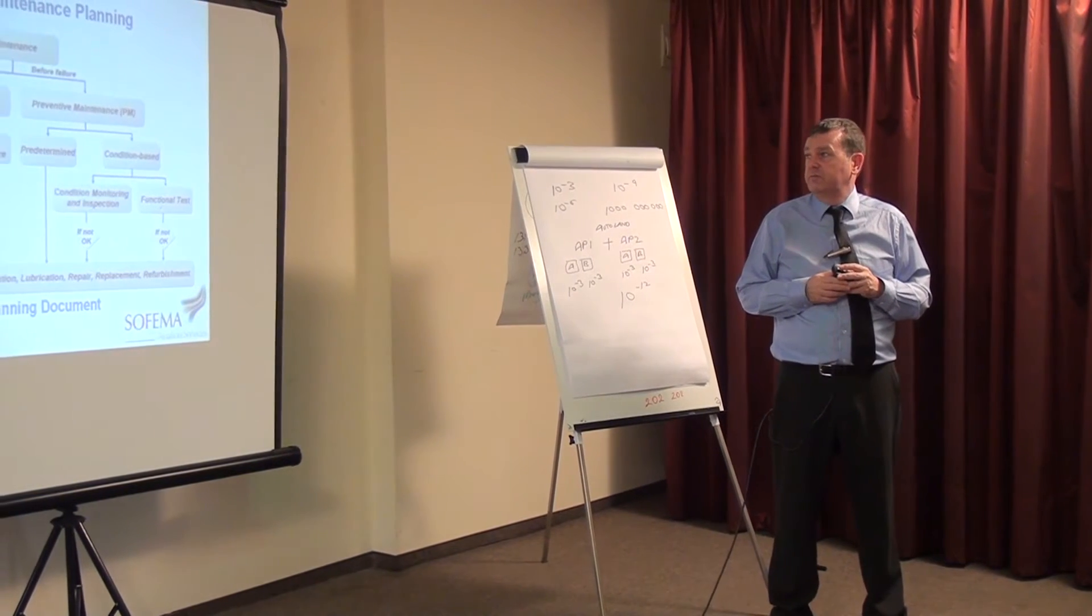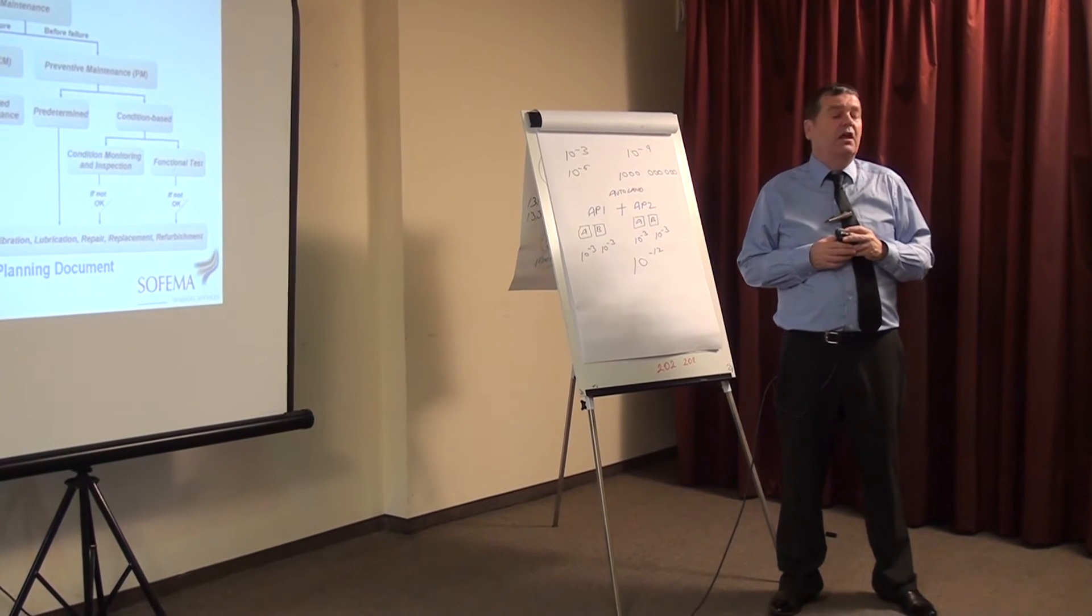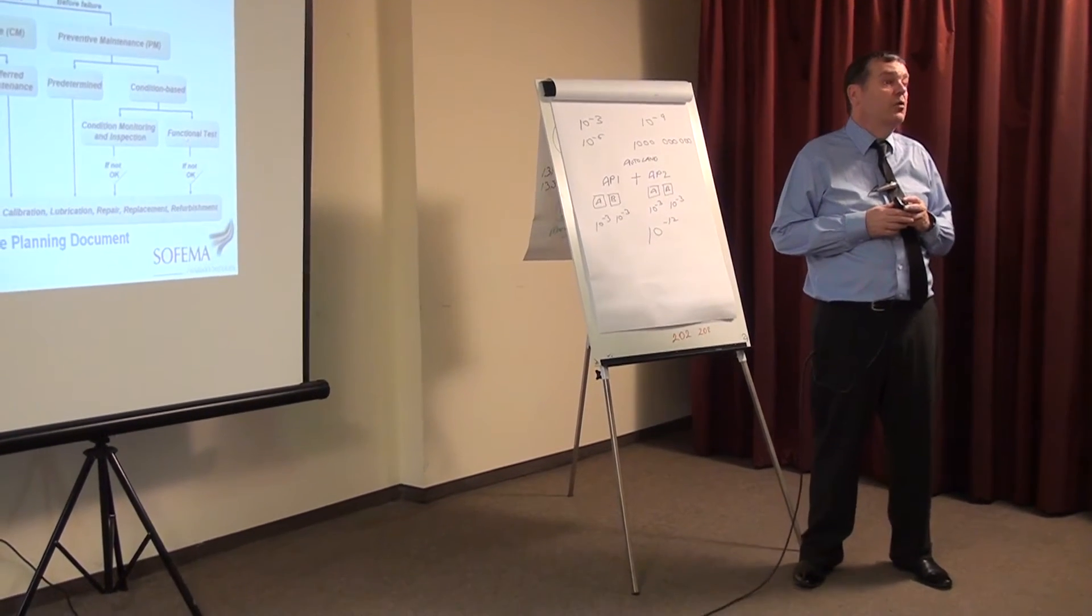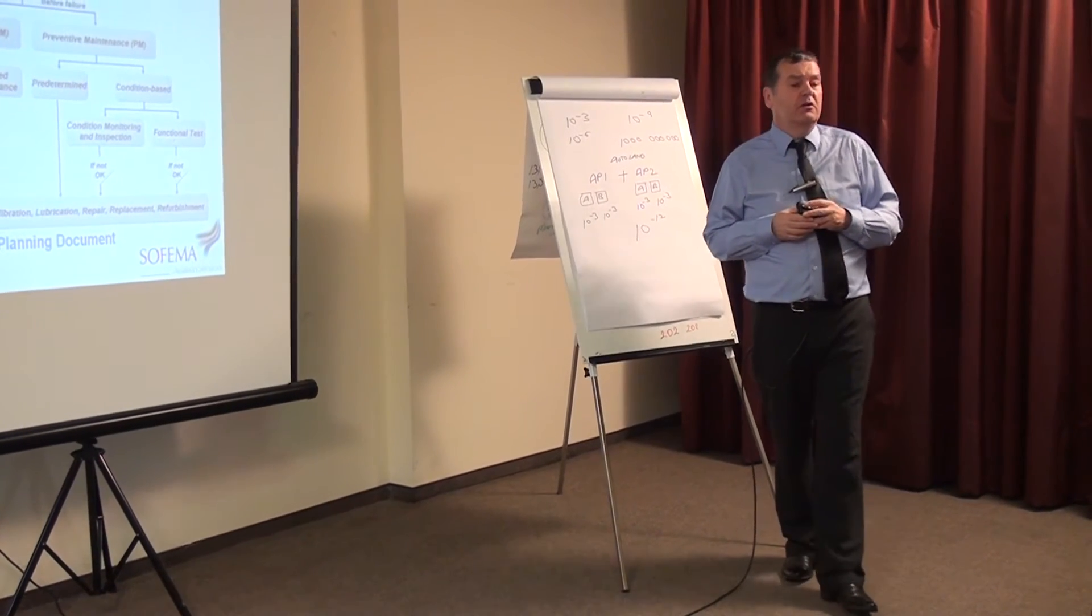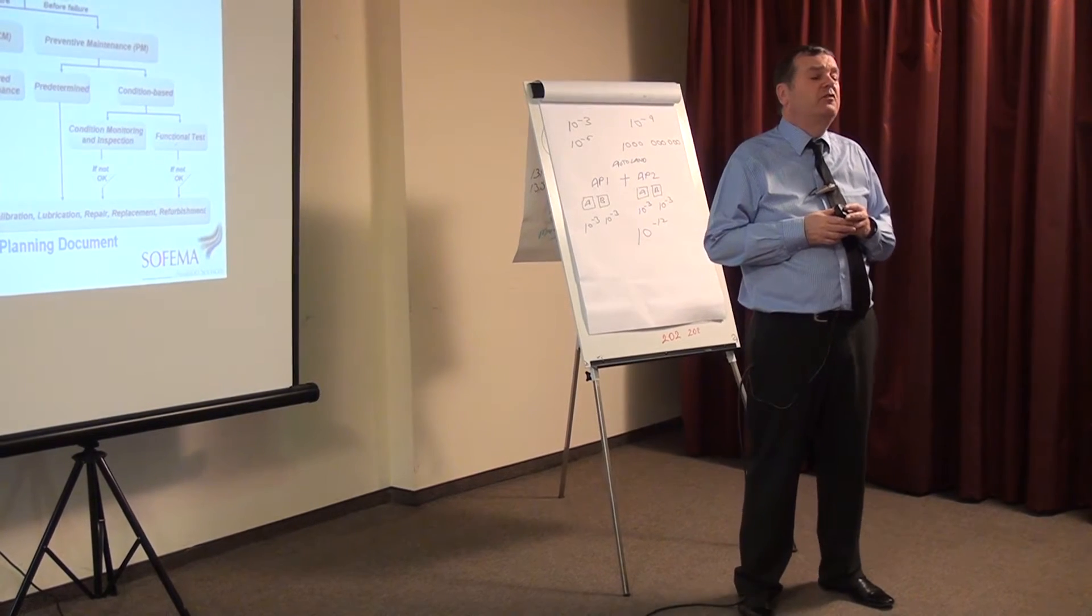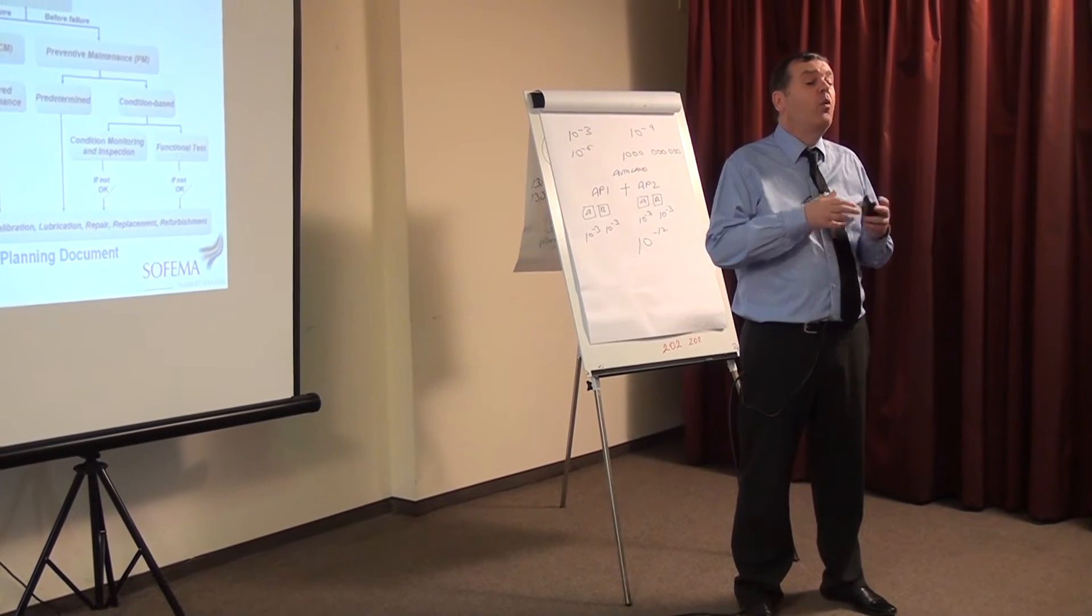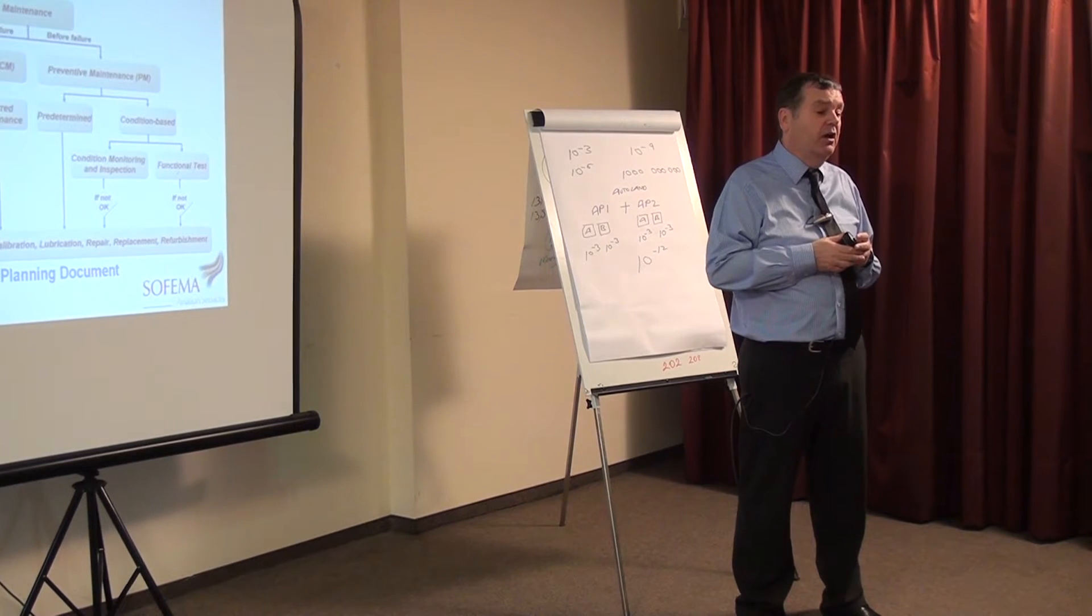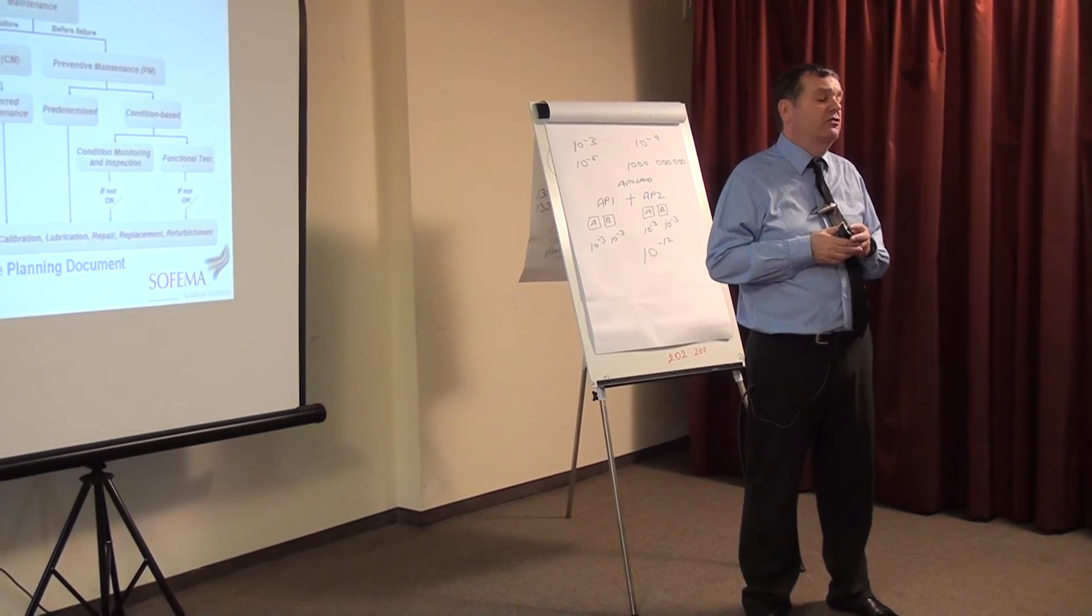The maintenance planning document is the source document for the maintenance program. It's the output document of the MRBR, the Maintenance Review Board Report. It's also where the manufacturer, the type certificate holder, puts the information concerning the airworthiness limitations.